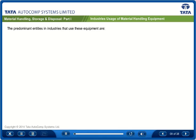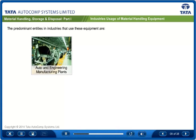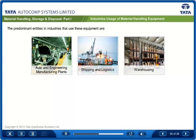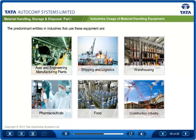The predominant entities in industries that use these equipments are auto and engineering manufacturing plants, shipping and logistics, warehousing, pharmaceuticals, food and construction industry. Small industries also use material handling equipment that is needed for smaller workload and applications.